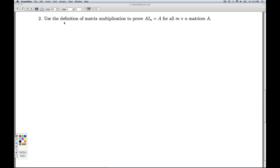Alright, in number 2, we're asked to use the definition of matrix multiplication to prove that A times Iₙ equals A for all M by N matrices A. In other words, we want to prove that the N by N identity matrix is given a good name because it's a multiplicative identity. So the way we set this up is we let A be a generic M by N matrix.